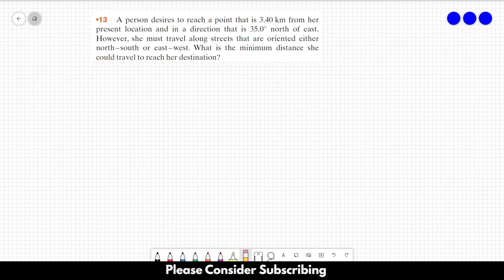Number 13. A person desires to reach a point that is 3.4 km from her present location and in a direction that is 35 degrees north of east. However, she must travel along streets that are oriented either north-south or east-west. What is the minimum distance she could travel to reach her destination?